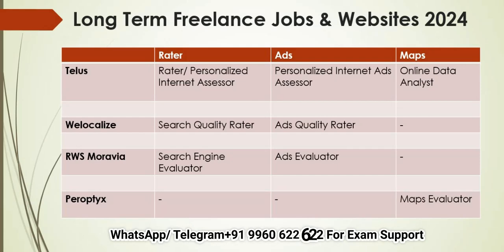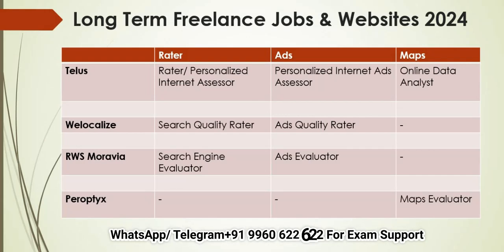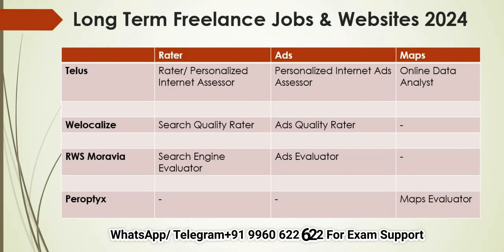These are the four resources through which you can apply for these jobs: Telus, WeLocalize, RWS, and Primetica. In Telus, the Rater job is called Rater for the US and Personalized Internet Assessor for other countries. The same job is called Search Quality Rater in WeLocalize and Search Engine Evaluator in RWS. Primetica only has the Maps role, called Maps Evaluator. Telus has all types of roles — the Ads role is called Personalized Internet Ads Assessor in Telus, Ads Quality Rater in WeLocalize, and Ads Evaluator in RWS. The Maps role in Telus is called Online Data Analyst.